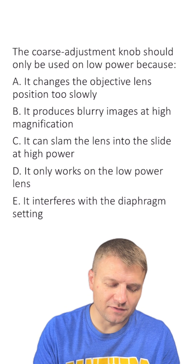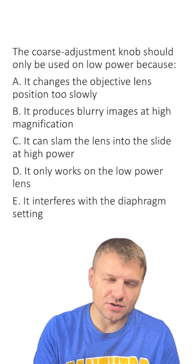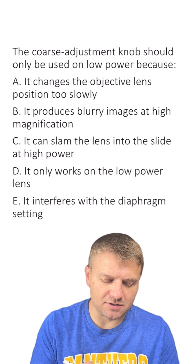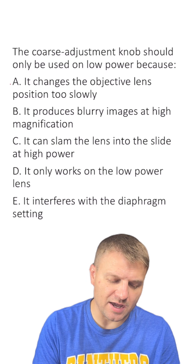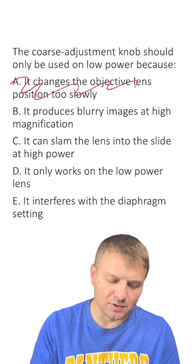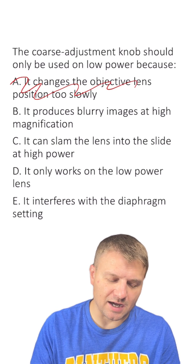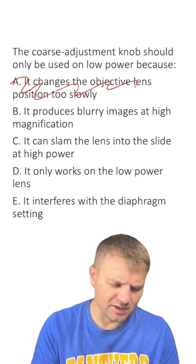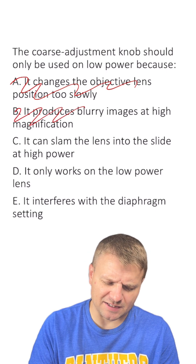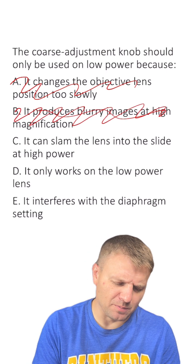A: it changes the objective lens position too slowly. No — it doesn't actually change the lenses, so A is out. B: it produces blurry images at high magnification. No, not really. I wouldn't think that's the right reason.